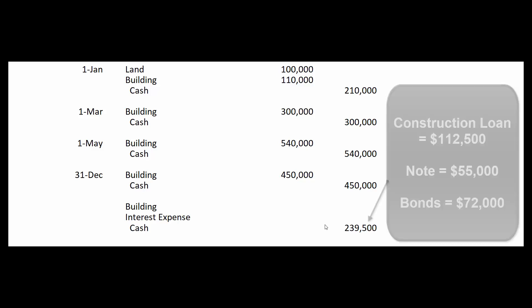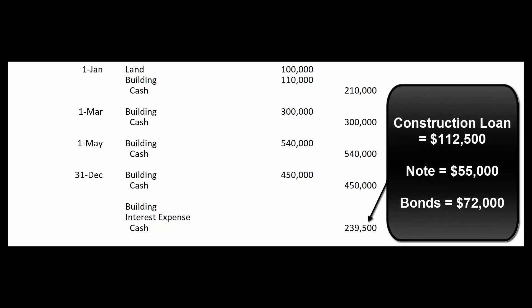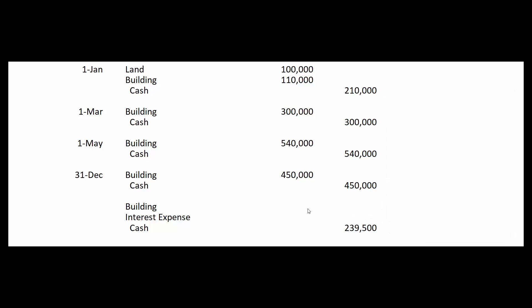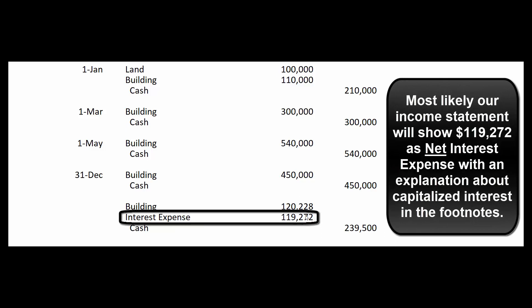We cut checks to all lenders for total interest of $239,500: $112,500 on the construction note, $55,000 on the $550,000 10% note, and $72,000 on the $600,000 12% bonds. But we don't write all of it to interest expense. We decided that $120,228 gets capitalized as part of the building's cost, and the balance of $119,272 goes on the income statement as interest expense. Most likely the $120,228 capitalized amount will be disclosed in the footnotes rather than shown separately on the face of the income statement.